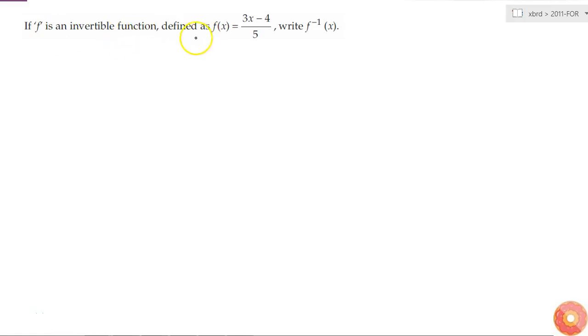If f is an invertible function defined as f(x) equals (3x minus 4)/5, then write f inverse of x. It is given that f is an invertible function. Therefore, let us assume if f(x) is equal to y.